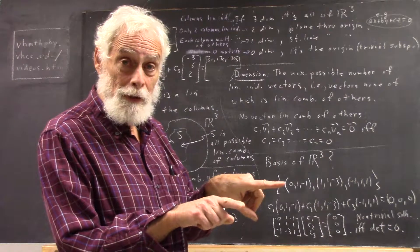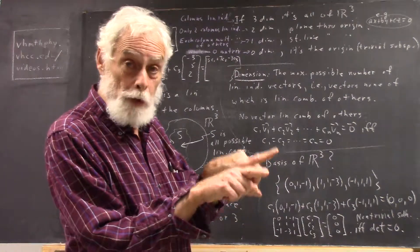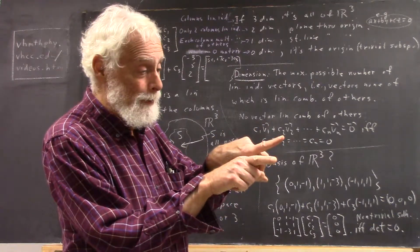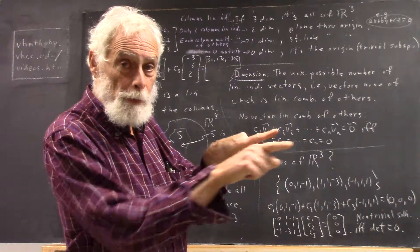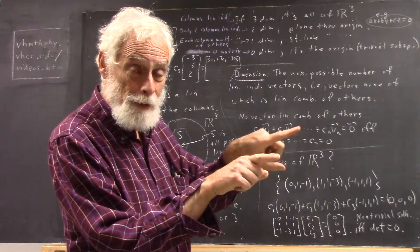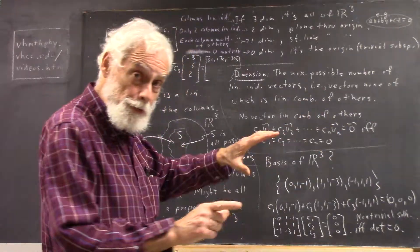If you have three vectors, then if two of them are linearly independent, whatever the third one is, you can take a multiple of this one and add to a multiple of this one and get that third one if it's in the same plane.